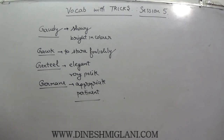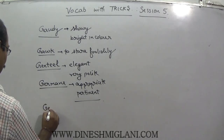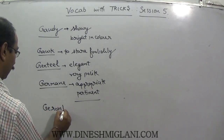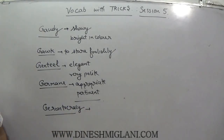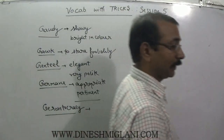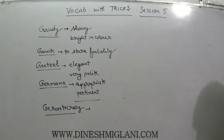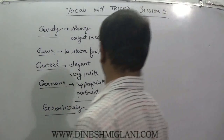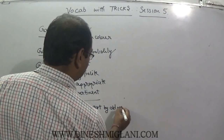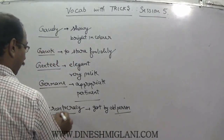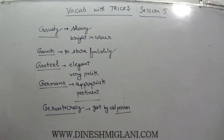Next word is gerontocracy, G-E-R-O-N-T-O-C-R-A-C-Y. '-cracy' means government of someone, like democracy. Gerontocracy basically means the government of old persons — budho ki government. We can say it as government by old persons. That is said to be gerontocracy.